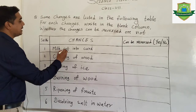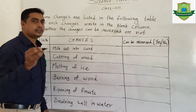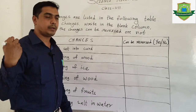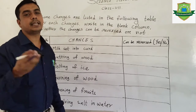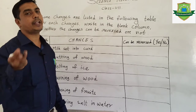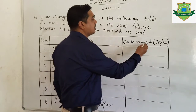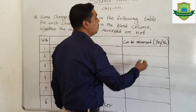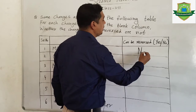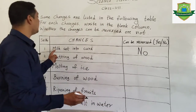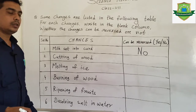First question is: milk set into curd. I discussed before that once milk is set into curd, you cannot get it back. So, can it be reversed? No. We cannot get back the milk again from the curd.